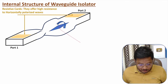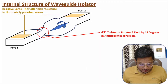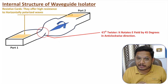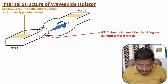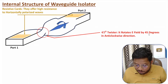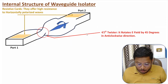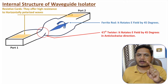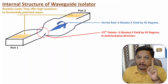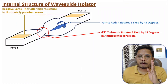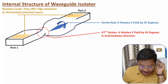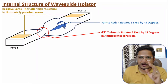Here we have a twister — a 45-degree twister — that is twisting polarization by 45 degrees in the anti-clockwise direction. And here we have a ferrite rod. This ferrite rod is rotating the electric field by 45 degrees in the direction shown. The twister twists the electric field by 45 degrees anti-clockwise, and the ferrite rod rotates the electric field by 45 degrees in its fixed direction.